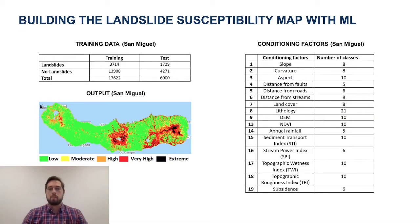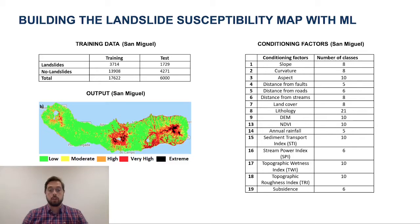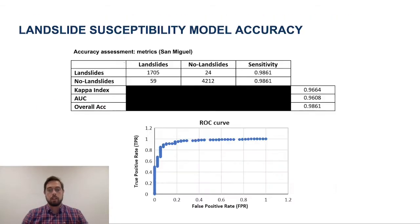To train our model, we had to gather a lot of information on past landslide activity, as well as many conditioning factors from different sources. The output of our model was a high resolution, very accurate representation of the landslide susceptibility.